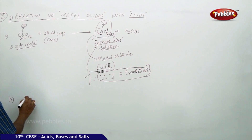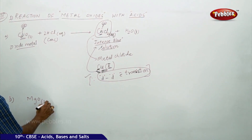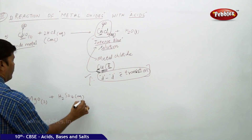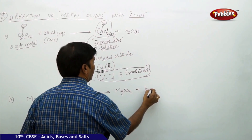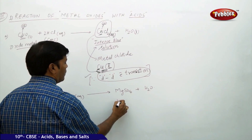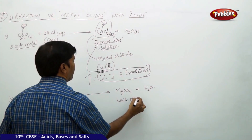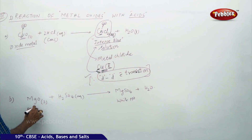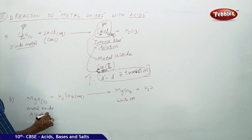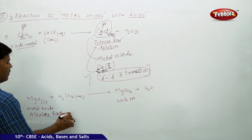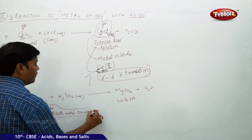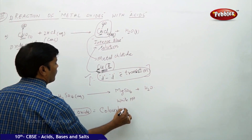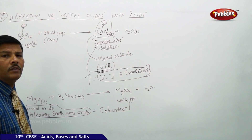One more example: take magnesium oxide, which is also a metal oxide. It is treated with aqueous H₂SO₄. Here you are going to get magnesium sulphate plus H₂O. The color formation here gives a white precipitate. Magnesium oxide is an alkaline earth metal oxide, and alkaline earth metal oxides are colorless — that is why they give a white precipitate.